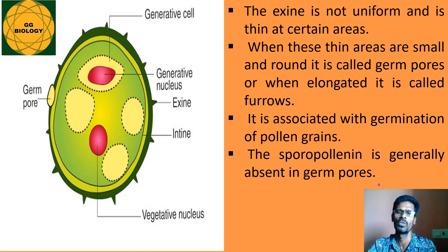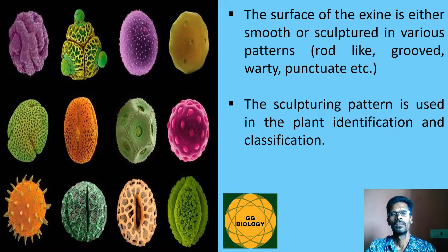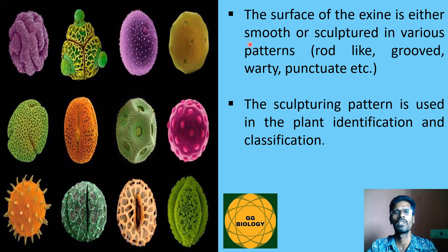The thin pore regions are necessary for germination, and sporopollenin is generally absent in the germ pore areas. The surface of the exine may be either smooth or sculptured in various patterns — such as rod-like, grouped, or punctuated forms. This sculpturing pattern of the exine is very important for identifying which plant class a specimen belongs to.